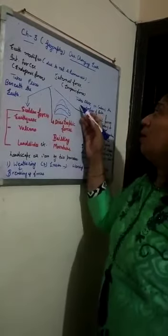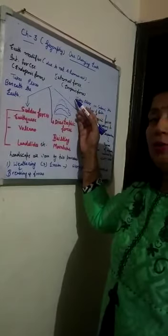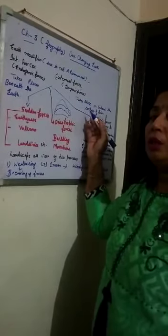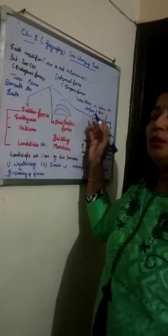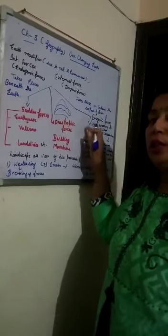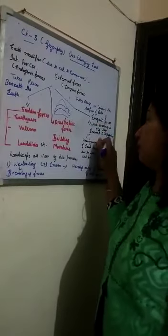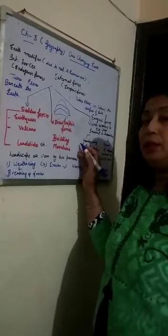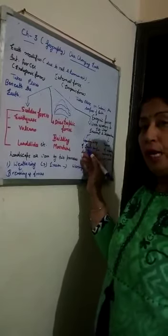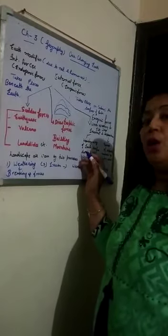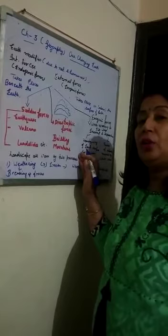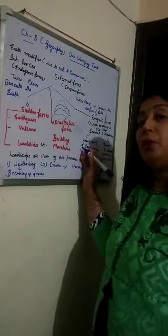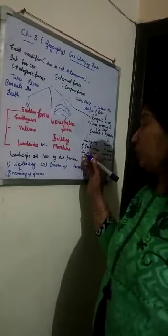Next are external forces, also known as exogenic forces — forces that work above or on the earth's surface and change the earth's shape. These work in two ways: erosional activity and depositional activity. Erosional activity means the wearing away of the landscape by different agents like water, wind, glacier, etc. These agents work on the surface and change the earth's surface shape.